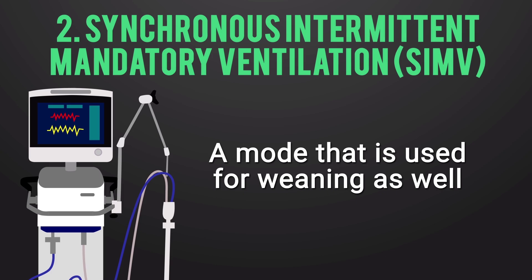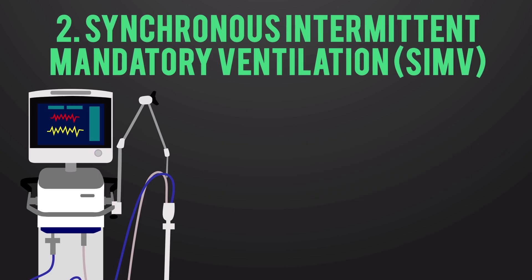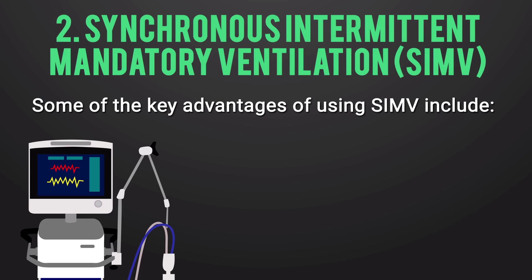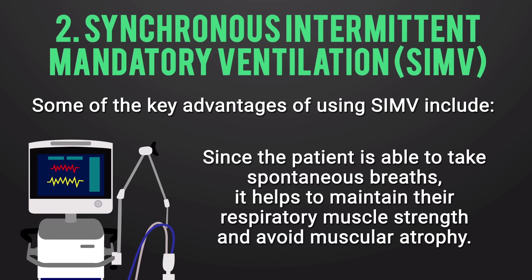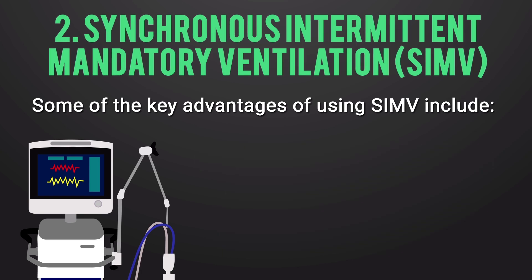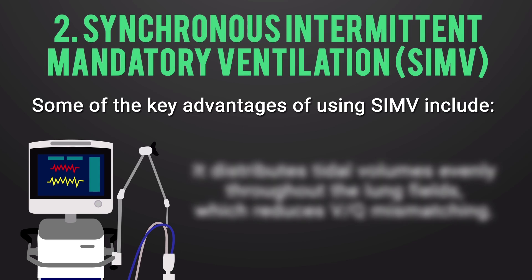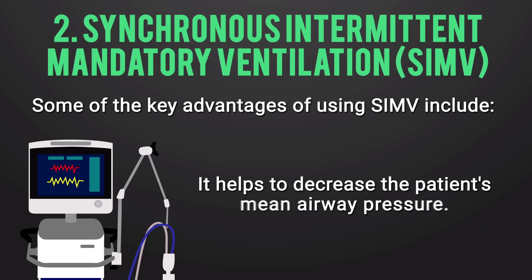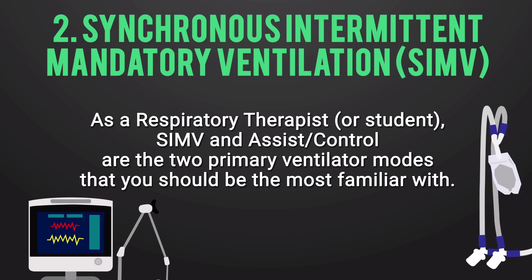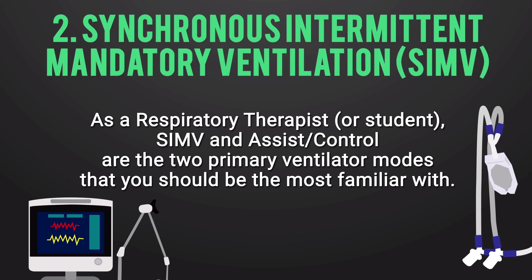SIMV is also used for weaning. Key advantages include: since the patient can take spontaneous breaths, this helps maintain respiratory muscle strength and avoid muscular atrophy. Additionally, SIMV distributes tidal volumes more evenly throughout the lung fields, which can reduce VQ mismatching. Finally, SIMV helps decrease the patient's mean airway pressure. As a respiratory therapist or student, SIMV and Assist Control are the two primary ventilator modes you should be most familiar with.